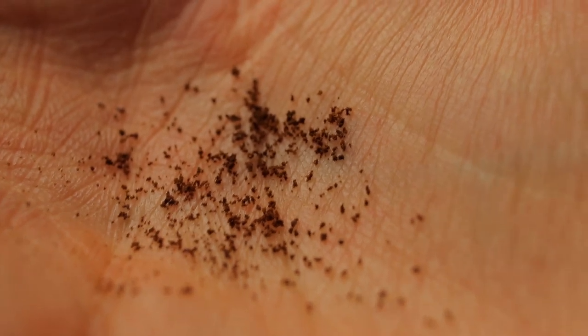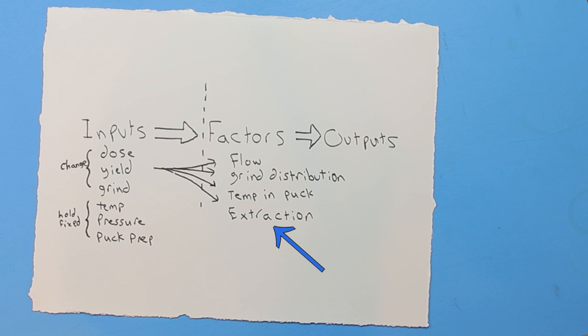Espresso is extracted at pressure, which helps increase the flow of water despite a really fine grind that would normally clog with just gravity pulling. Extraction is a factor, and when brewing espresso we want an even flow of water across as much surface area of coffee particles as possible.